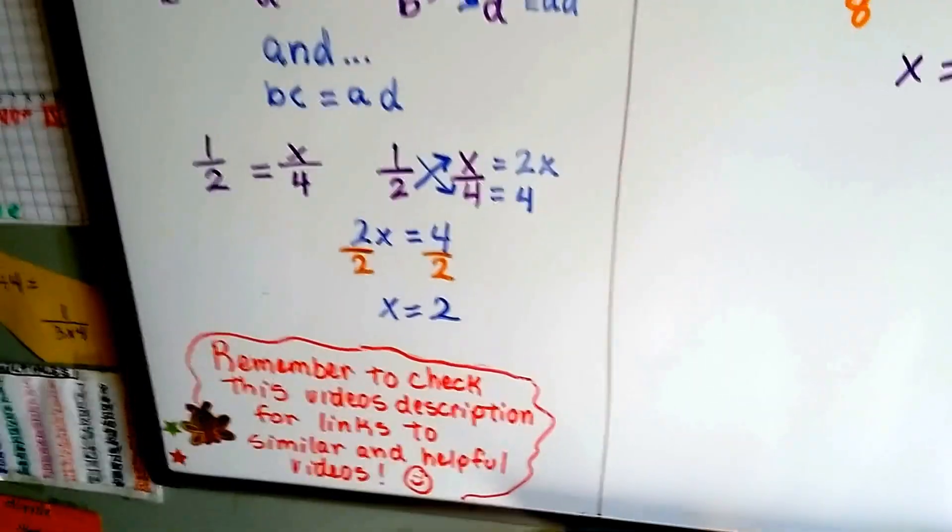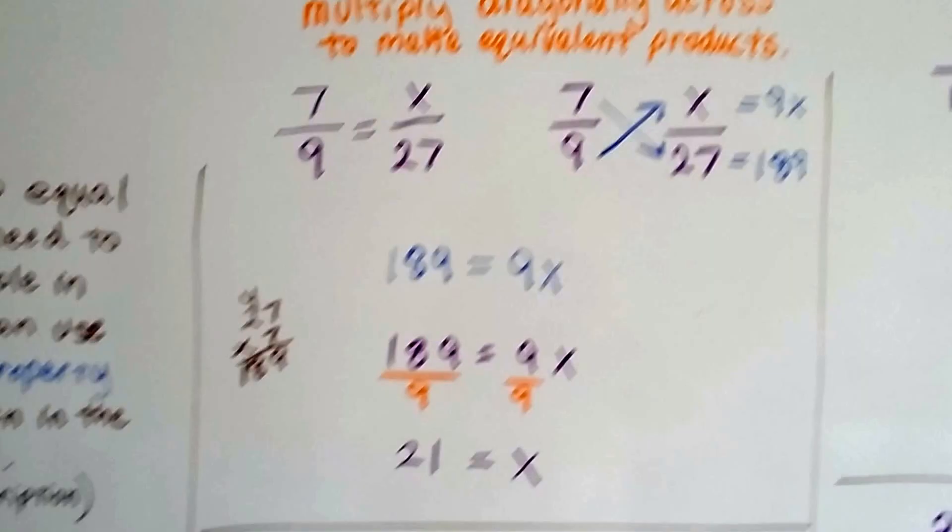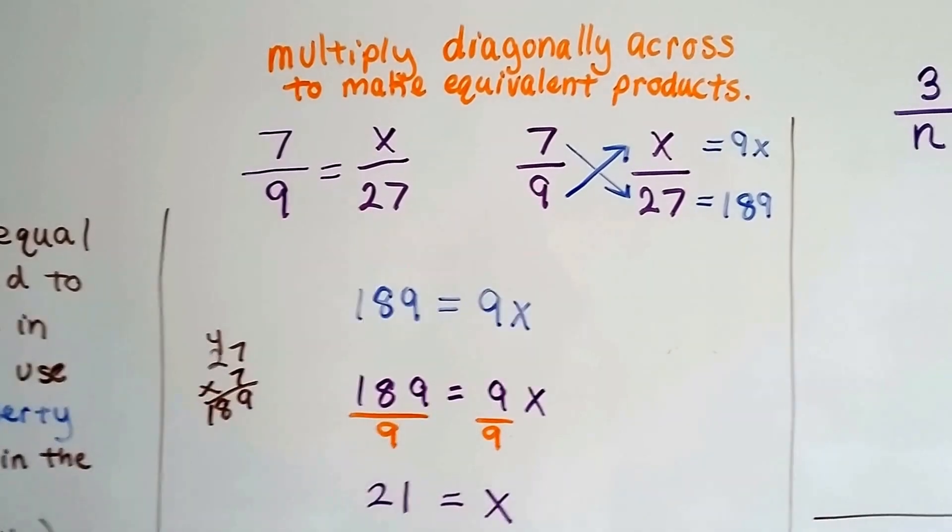Remember there's links in this description. So we just multiply diagonally across to make equivalent products.